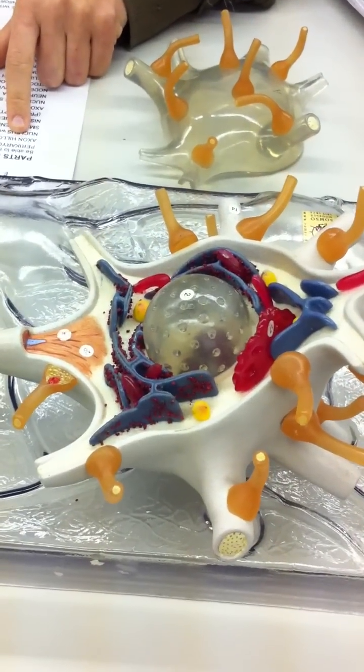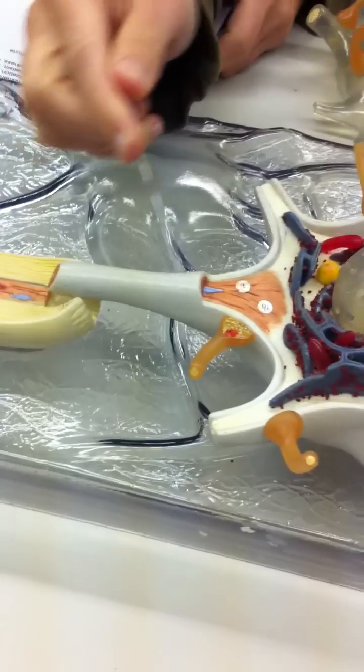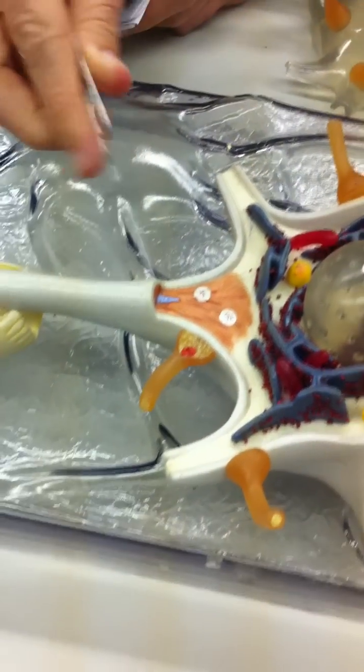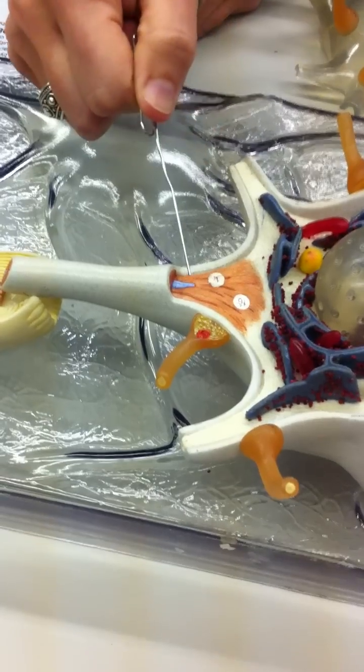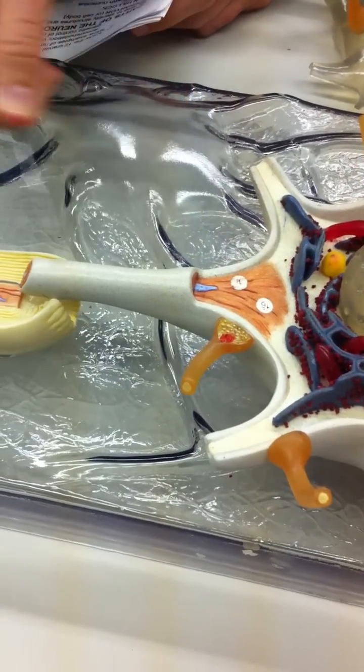Next on the list is the axon hillock. The axon hillock is this area right here. It's the trigger area where action potentials occur. This is your axon hillock here. It's like the beginning of where your axon starts.